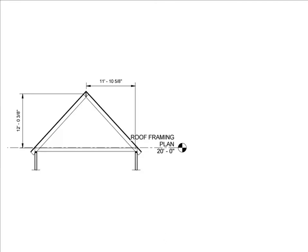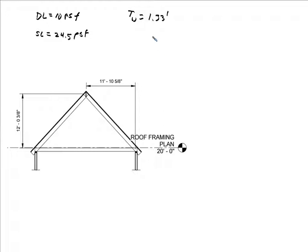Our dead load is 10 pounds per square foot. What we're going to do in this video is find the maximum moment, maximum shear, and size the rafters so they can withstand the anticipated loads. The rafters are spaced at 16 inches on center, which converts to 1.33 feet. We multiply that spacing by the dead load and snow load to get the uniform linear load. Our uniform dead load is 10 times 1.33, giving 13.33 pounds per linear foot.